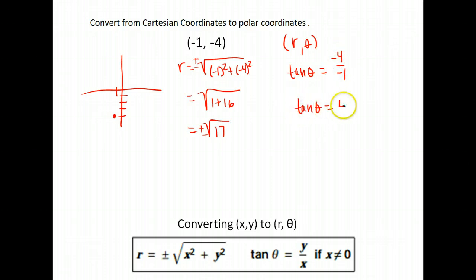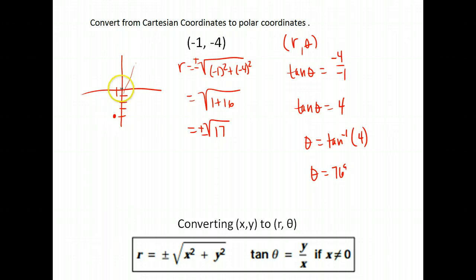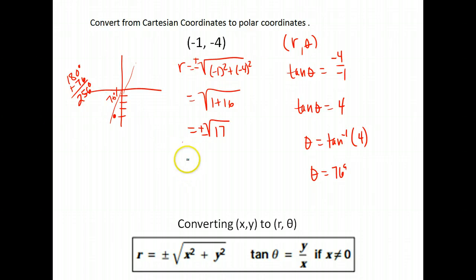If we do the inverse tangent of both sides, we again get θ equals the inverse tangent of 4, which gives 76 degrees. But 76° is in the first quadrant and our answer needs to be in the third quadrant. Since tangent is positive in both the first and third quadrants, we find the angle in the third quadrant: 76 degrees past 180°, which puts us at 256°. So one answer is (positive √17, 256°) — we open to that angle and go a positive distance into that quadrant.